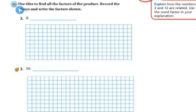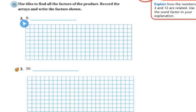The next question says to use the tiles to find all the factors of the product, record the arrays, and write the factors shown. For 5, the only thing that makes 5 is 1 times 5. So 1 and 5 are my factors, because 1 times 5 equals 5. There's no other combination I can make.